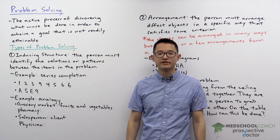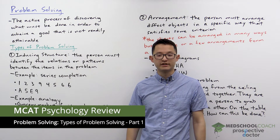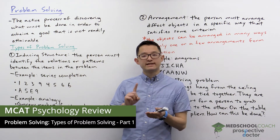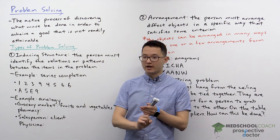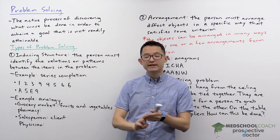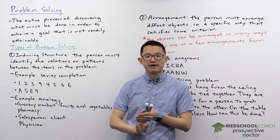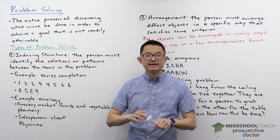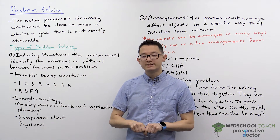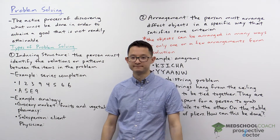In the next few videos we're going to go over an important aspect of cognition, which is problem solving. We're going to discuss the different types of problem solving, barriers to problem solving, approaches to problem solving, and heuristics and biases. In this video we're going to start by defining what problem solving is and go over two different types of problem solving.